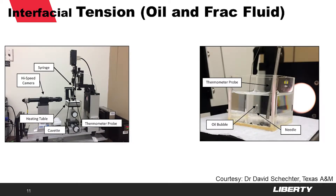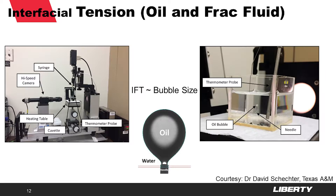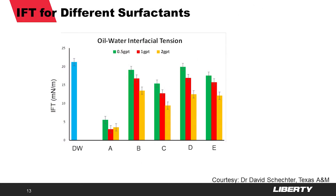The measurement of interfacial tension — the lab setup is pretty simple. It's really just squeezing an oil bubble into a solution of water and surfactant and having a high-speed camera record the bubble size created of the oil embedded in the water and surfactant. The bubble size is proportional to the interfacial tension. Here's an example of measurements of a Wolf Camp oil — interfacial tension measurements versus five different surfactants at different concentrations from a half to two GPT. You can argue that surfactant A is the best performing in terms of interfacial tension reduction, but surfactant C may also be plausible.